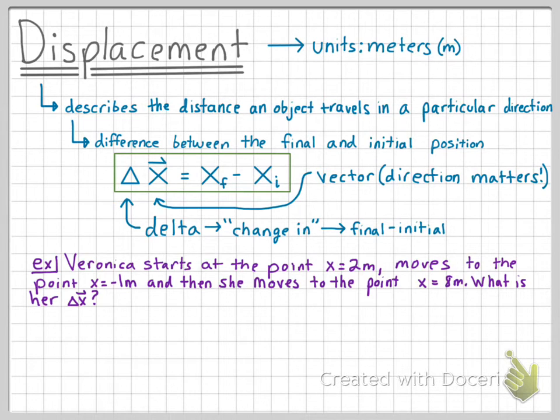Let's do an example. Veronica starts at the point x equals 2 meters, moves to the point x equals negative 1 meter, and then moves to the point x equals 8 meters. What is her displacement? First, let's draw a coordinate system just so we can visually see these movements. This number line will go from negative 1 to 8.